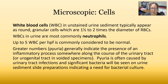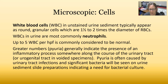Greater numbers of white cells indicate pyuria, which is the presence of an inflammatory process somewhere along the urinary tract or urogenital tract. In a voided specimen, it could pick up bacteria from the genital side. Pyuria is often caused by a urinary tract infection, and significant bacteria will be seen on the urine sediment slide preparations, indicating a need for a bacterial culture.